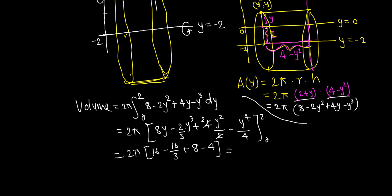So 16 plus 8 is 24, minus 4 is 20. 20 minus 16 thirds, which is 2π times—20 is 60 thirds minus 16 is 44 thirds. So 44 thirds, 44 times 2 is 88 thirds π cubic units, final answer.